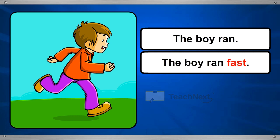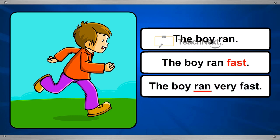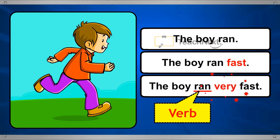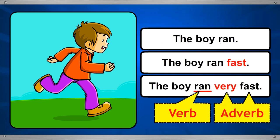As it adds to the description of the word ran. The boy ran. Now, let us modify this sentence further. The boy ran very fast. Here, the word very is another adverb, which is added to the adverb fast.